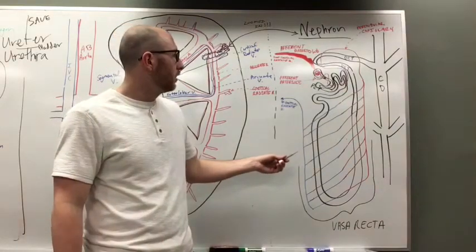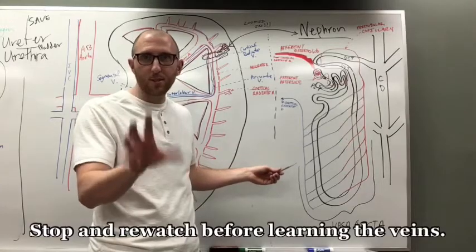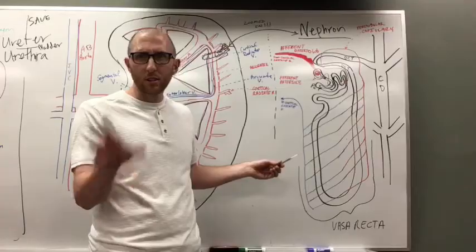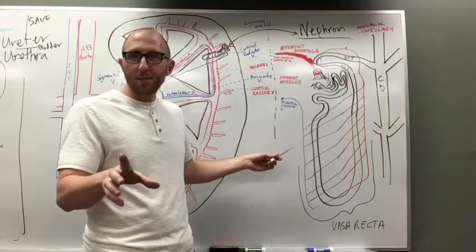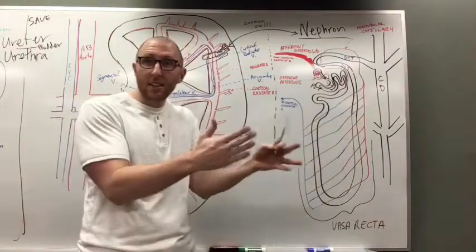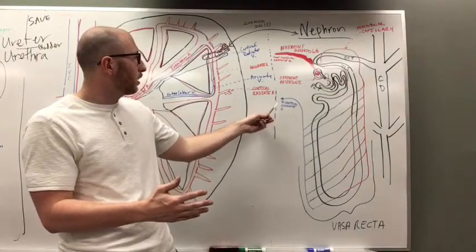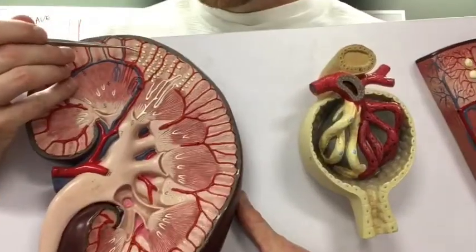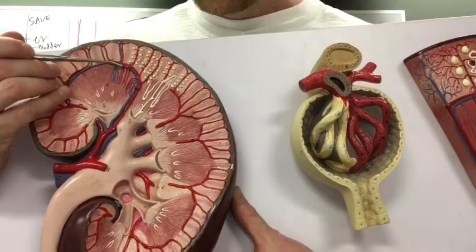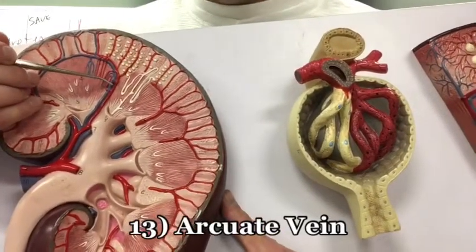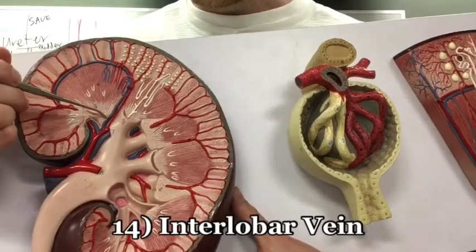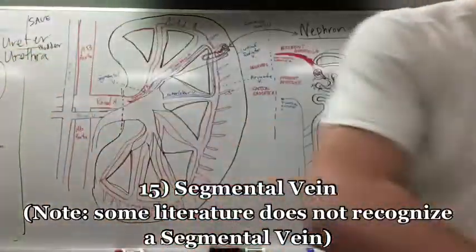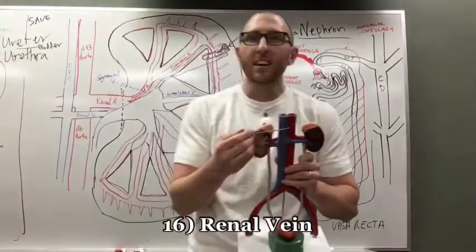Now the venous pathway is the reverse of how blood came in. From the cortical radiate vein, blood goes down to the arcuate vein, then to the interlobar vein — as my probe shows here — then the segmental vein. The segmental veins merge into the renal vein, and the renal vein merges into the inferior vena cava, returning blood to the heart.